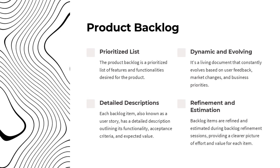The product backlog is a prioritized list of features and functionalities desired for the product. It's a living document that constantly evolves based on user feedback, market changes, and business priorities. Each backlog item, also known as a user story, has a detailed description outlining its functionality, acceptance criteria, and expected value. Backlog items are refined and estimated during backlog refinement sessions, providing a clearer picture of effort and value for each item.